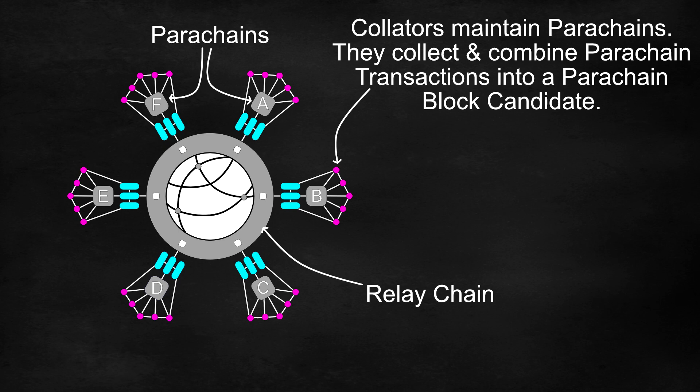They also produce state transition proofs. You can basically think of state transition proofs as a summary of the final account balances caused by the transactions in that block.